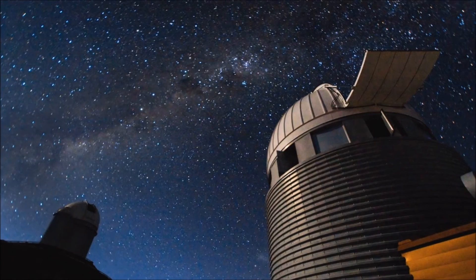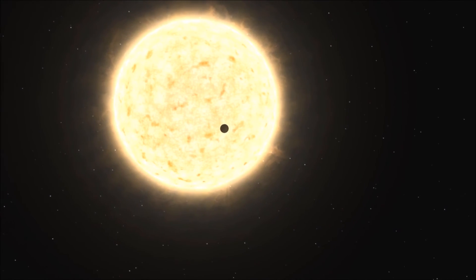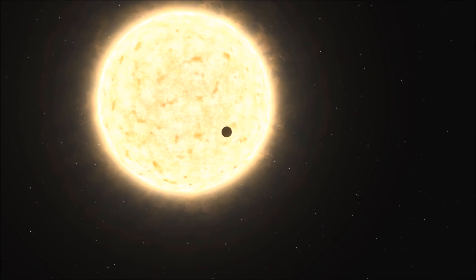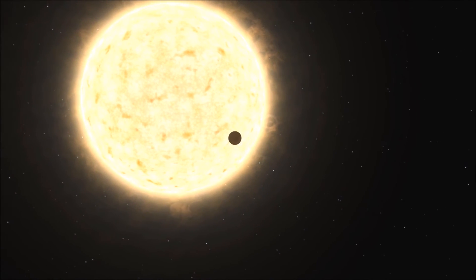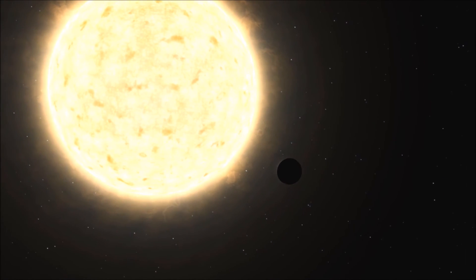Although the Jupiter-like exoplanet has escaped the fate of these inner planets so far, the star will expand again in the next stage of its evolution. When this happens, the star may engulf the planet, meaning it may be doomed after all.